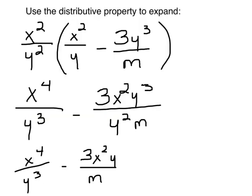It says use the distributive property to expand. I've done that for you. X squared times X squared is X to the 4th, Y squared times Y is Y cubed. So I've distributed it here. Now let's distribute it over this one.